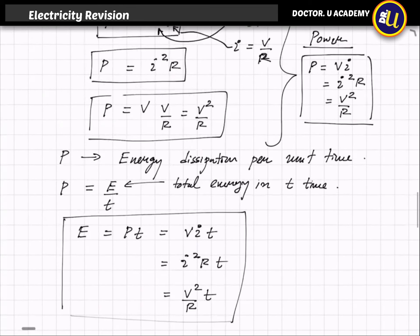The difference between total energy and power is that total energy is measured over a time period T, while power is energy measured for a unit time. That's the only difference. When calculating power, T becomes one — that's the essential thing to understand.